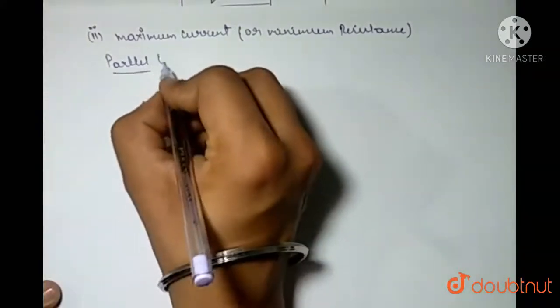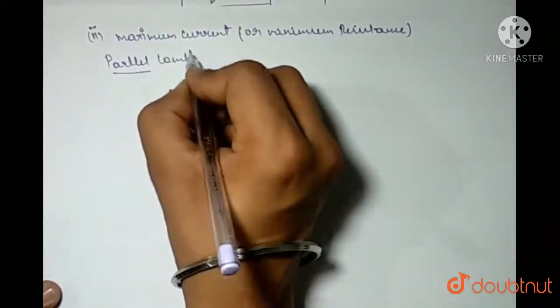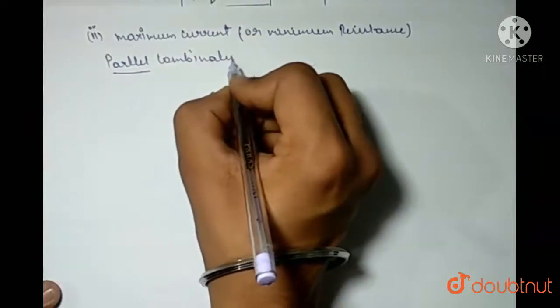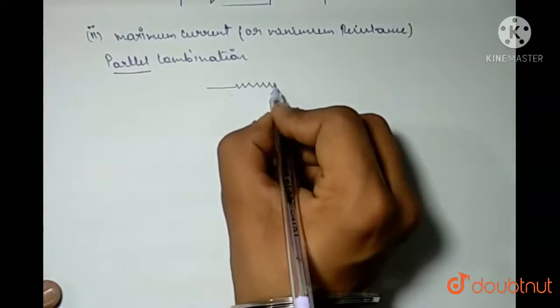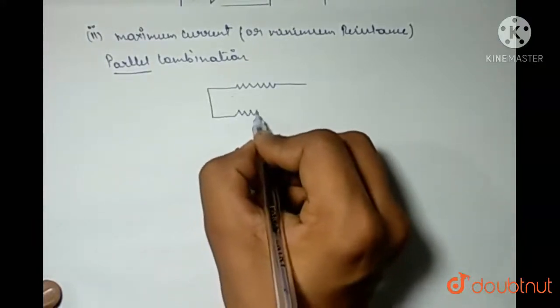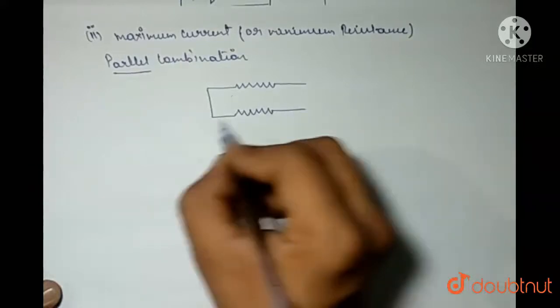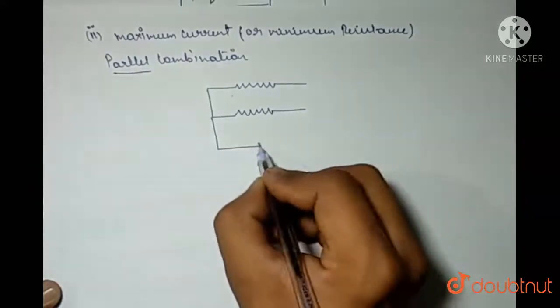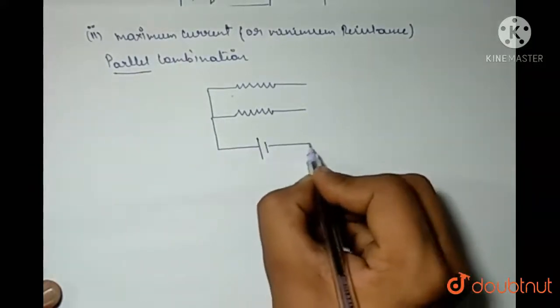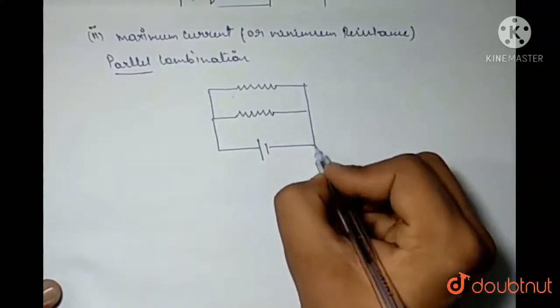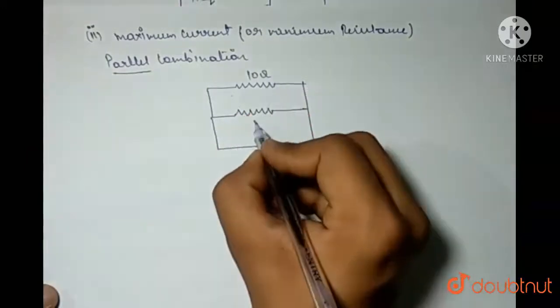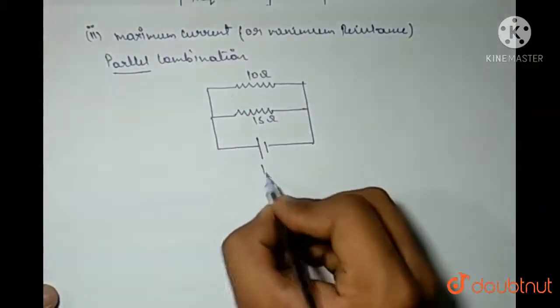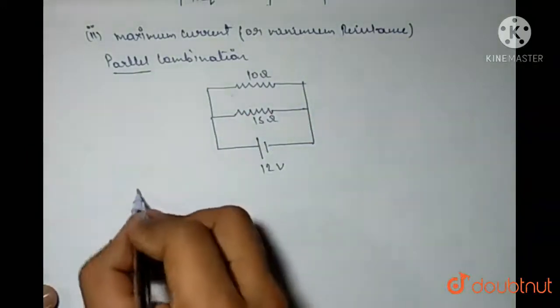Parallel combination. So I am connecting these two resistances in parallel with the same EMF. This is 10 ohm, this is 15 ohm and this is 12 volt.